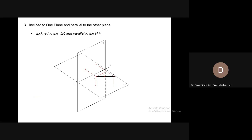Another case: the line is parallel to the horizontal plane — you can judge it from its ends' distances. End A and end B have the same distance from the horizontal plane, so the line is parallel to the horizontal plane. But the ends' distances from the vertical plane are different, so the line is inclined to the vertical plane. The inclination with the vertical plane will be shown with the angle phi.